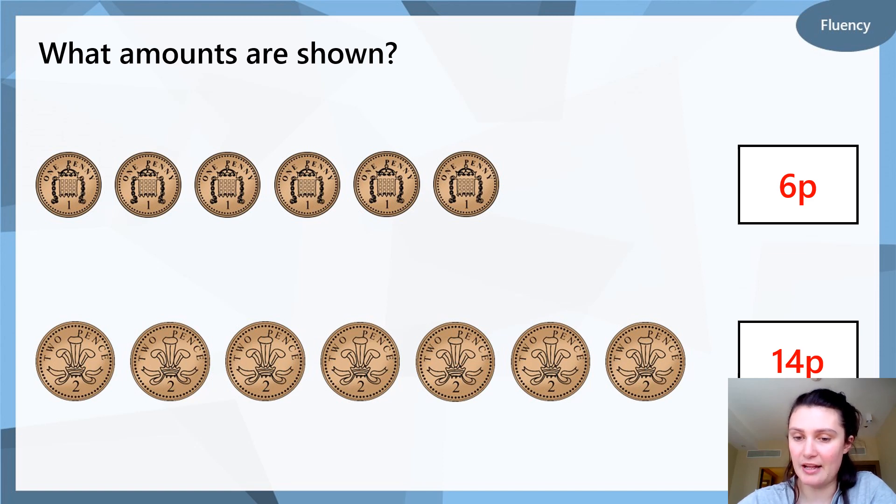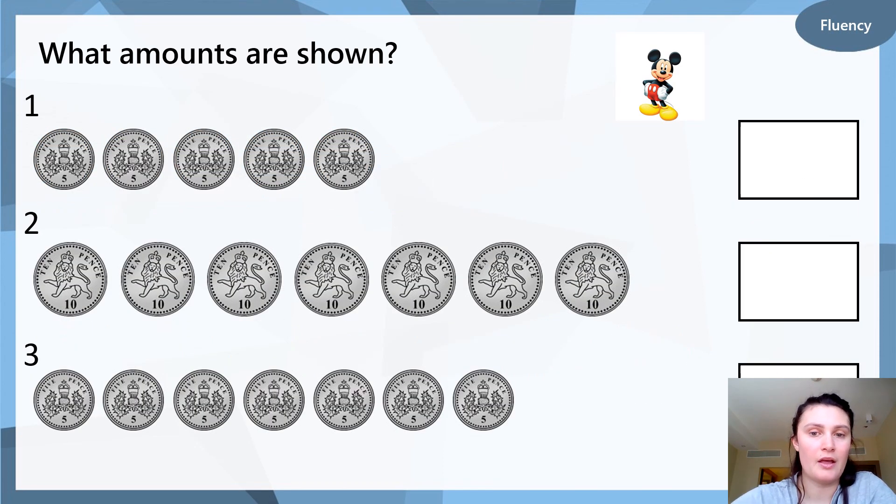Are you ready to try some of these by yourself? Get your pencil and your paper and let's have a look at the first question. Okay, so here we have question one, question two and question three. Question one and three are all 5p coins, so you can use your skip counting by 5 to show the amount. Question two are all 10p coins, so you can use skip counting by 10. Pause the video while you count what amounts are shown for question one, two and three.